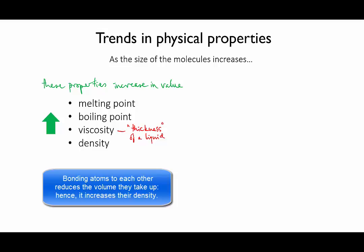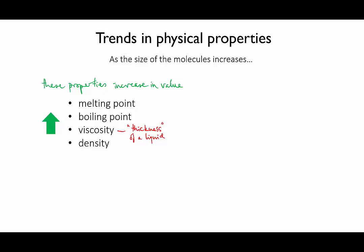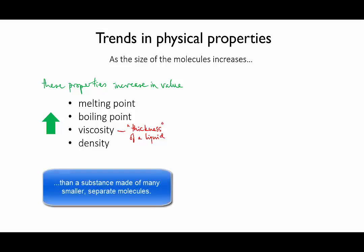Since density is mass over volume, if you can reduce the volume taken up by a certain number of atoms, that will increase their density. So compounds made of large molecules with many atoms bonded together will tend to have a higher density.